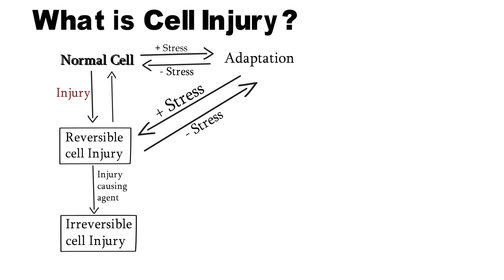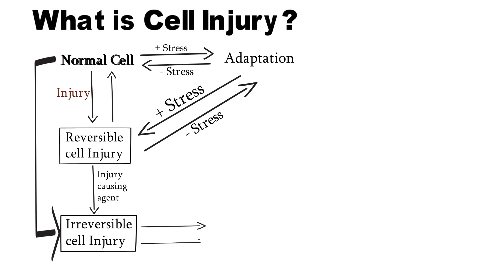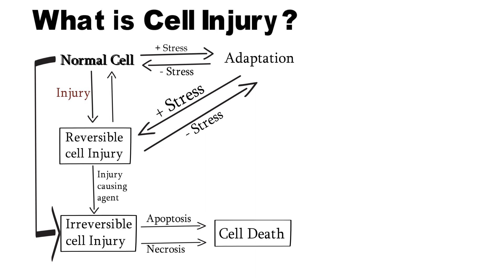There is one more possibility: the normal cell gets severe injury directly and becomes irreversible cell injury. In irreversible cell injury, the cell is going to die by the process of apoptosis or necrosis. We will discuss these things step by step in our upcoming videos.